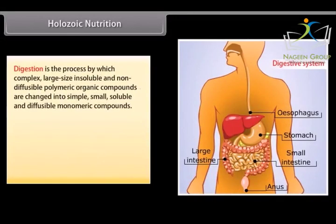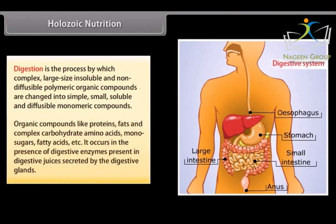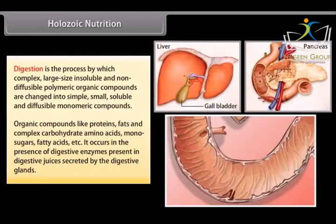Digestion is the process by which complex, large-size, insoluble and non-diffusible polymeric organic compounds are changed into simple, small, soluble and diffusible monomeric compounds. Organic compounds like proteins, fats, and complex carbohydrates are broken down into amino acids, monosugars, and fatty acids. It occurs in the presence of digestive enzymes present in digestive juices secreted by the digestive glands.